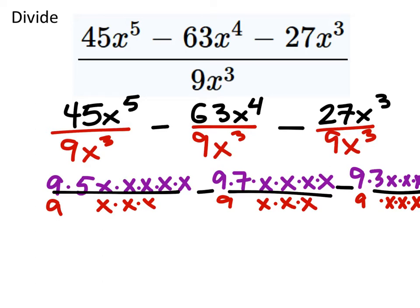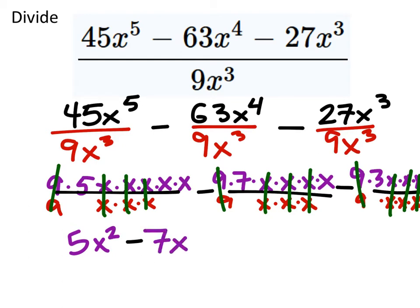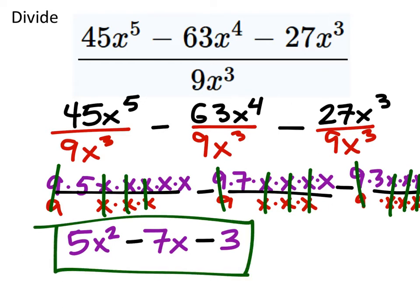I've deliberately lined those up on purpose so we can start canceling stuff out. My 9's cancel into 1's. Same with any groupings for x. These become factors of 1, which I don't really need to show those 1's. So what am I left with? I've got this 5 and then I've got 2 of those x's. So x squared minus that 7 with 1x minus that 3.